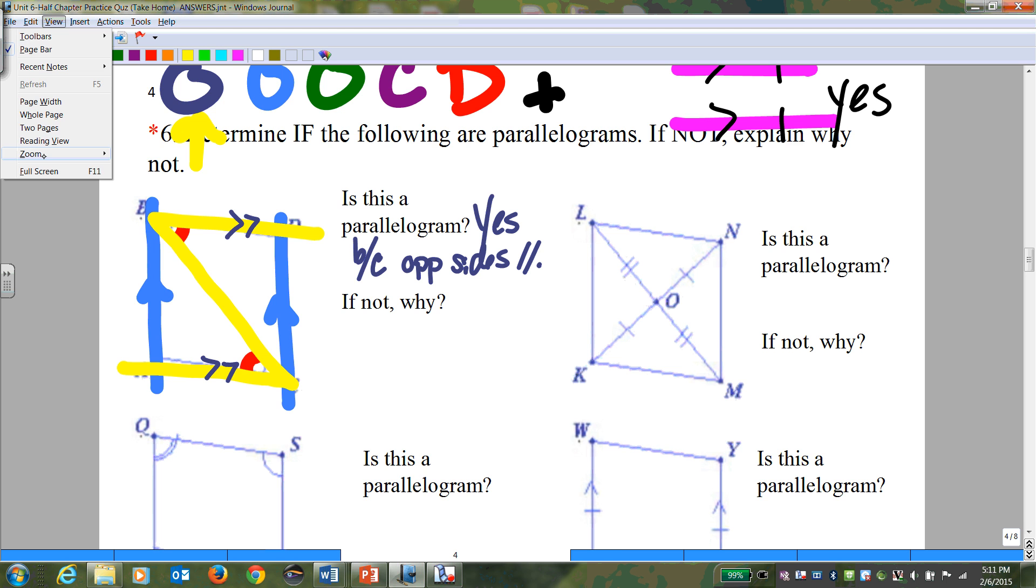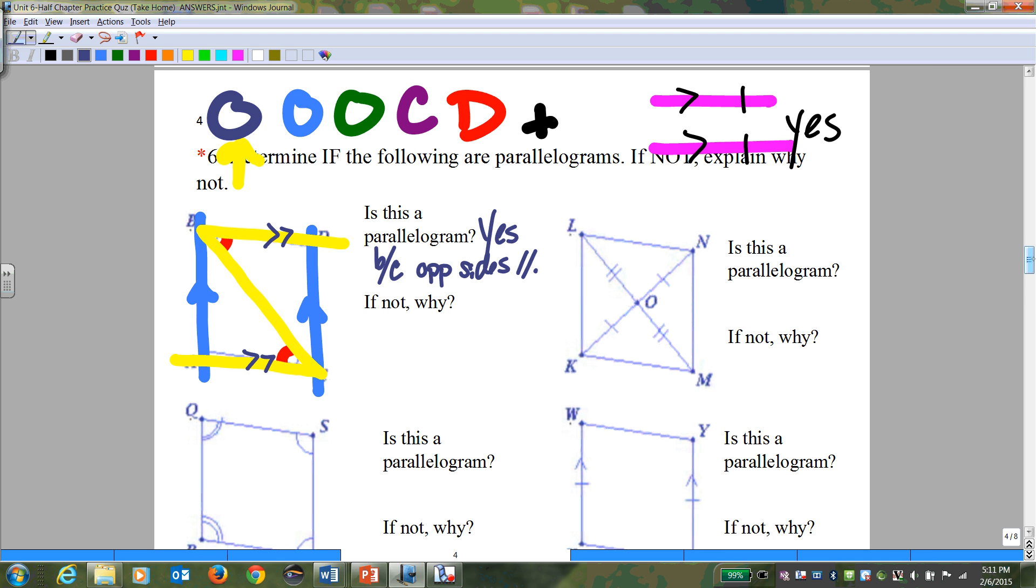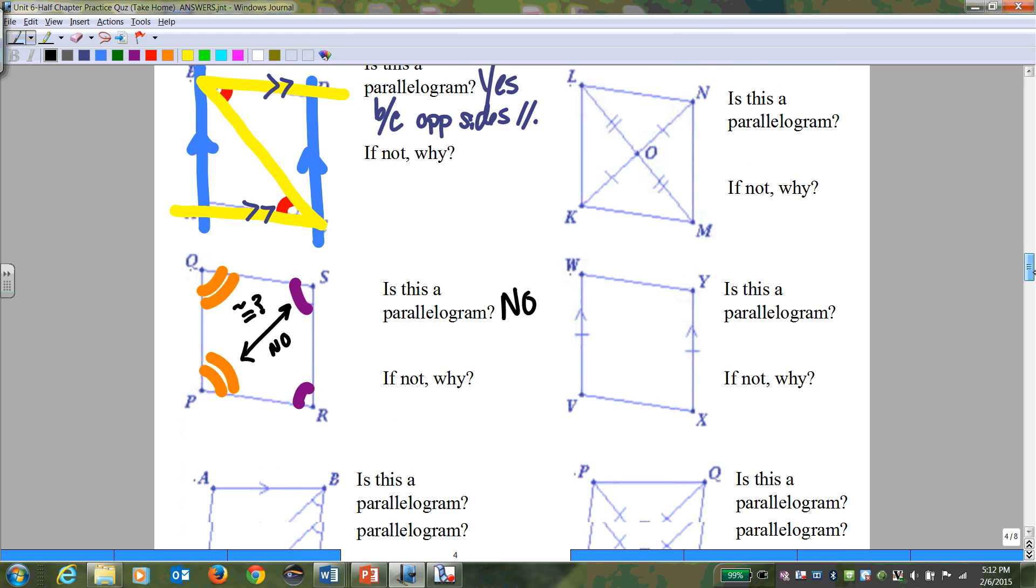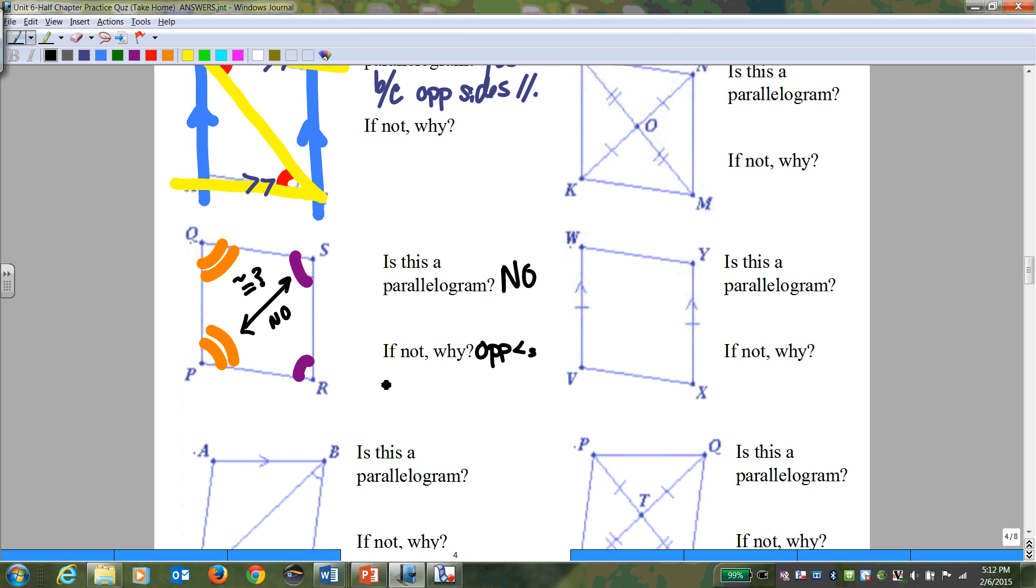So let's try the one right below it. We have here, we have these two angles that are equal, and we have these two angles that are equal. And is it a parallelogram? Well, opposite angles, are they congruent? The opposite ones, are they congruent? And the answer is no. So this is not a parallelogram. And the reason why is because opposite angles not congruent, could be an isosceles trapezoid.